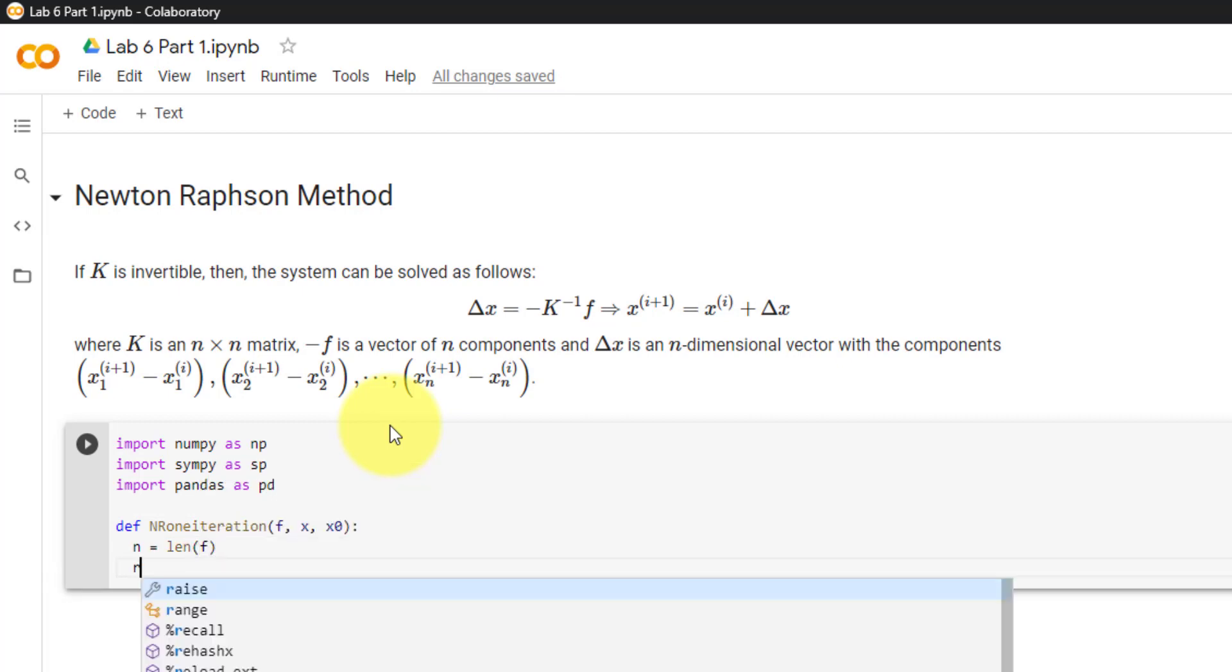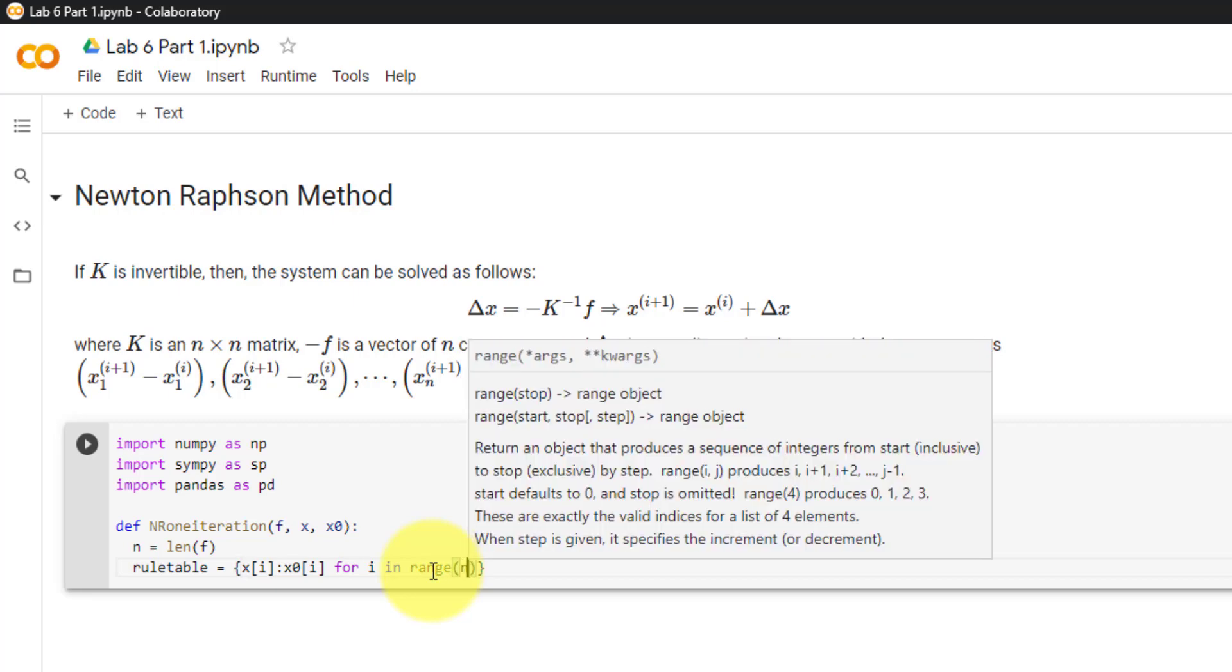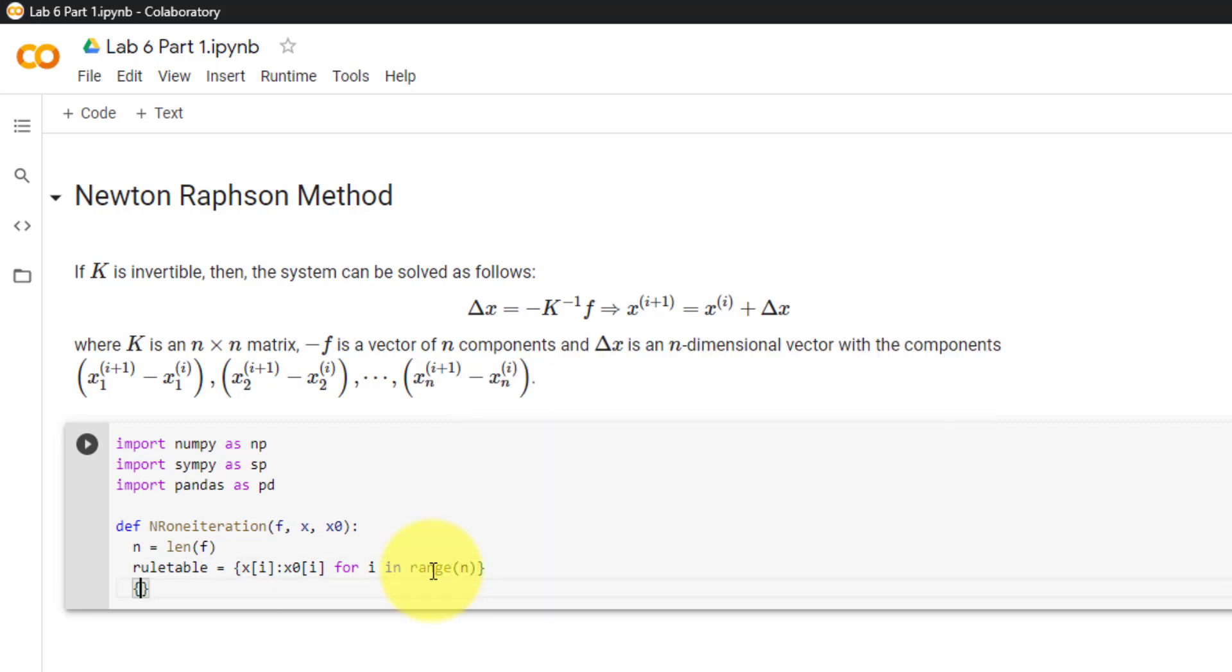Next, we will declare a dictionary called rule table equal to curly brackets, which will map each of our symbols in x to its corresponding initial guess in x0. So to do this, we will set the key xi colon, which is mapped to x0 at i. And we will loop through all of our symbols using for i in range n. So our rule table will look something like this. Say we have the symbols x, y, and z, with initial guesses of 1, 2, and 3. Here you can see each of the symbols will be mapped to a number.